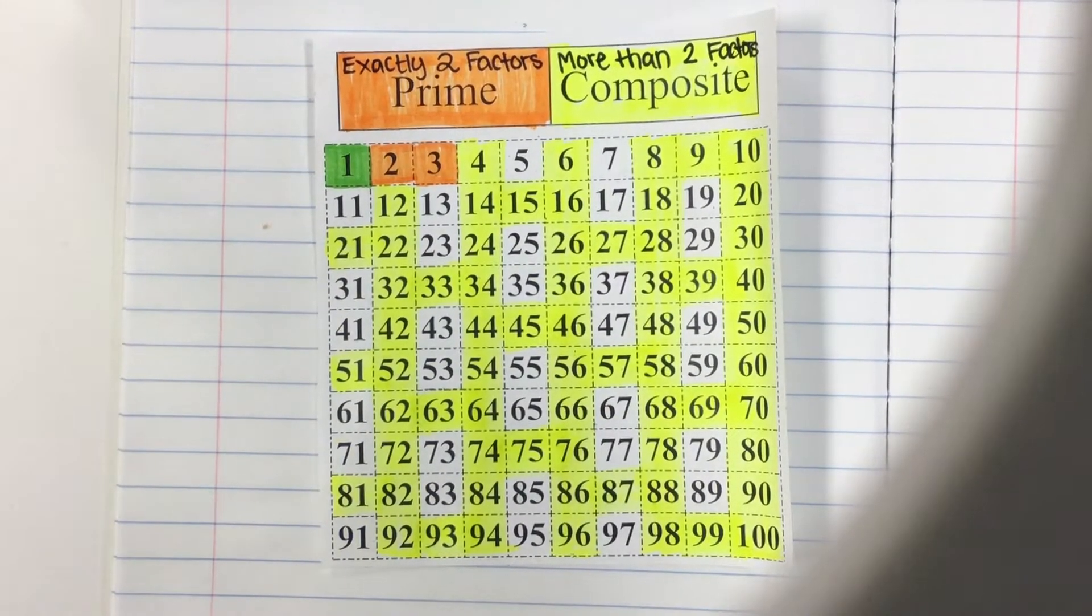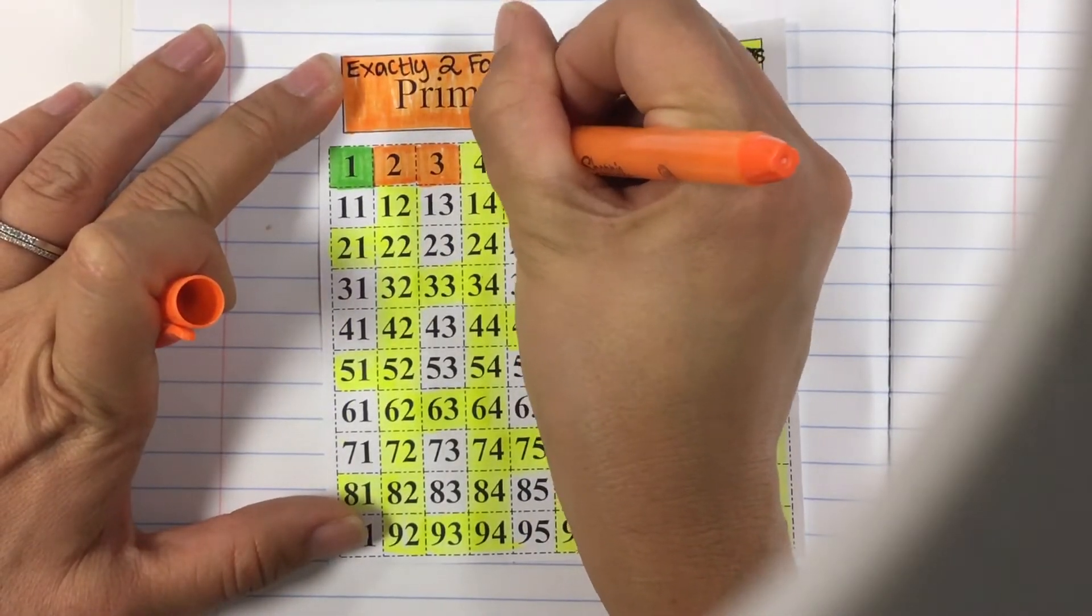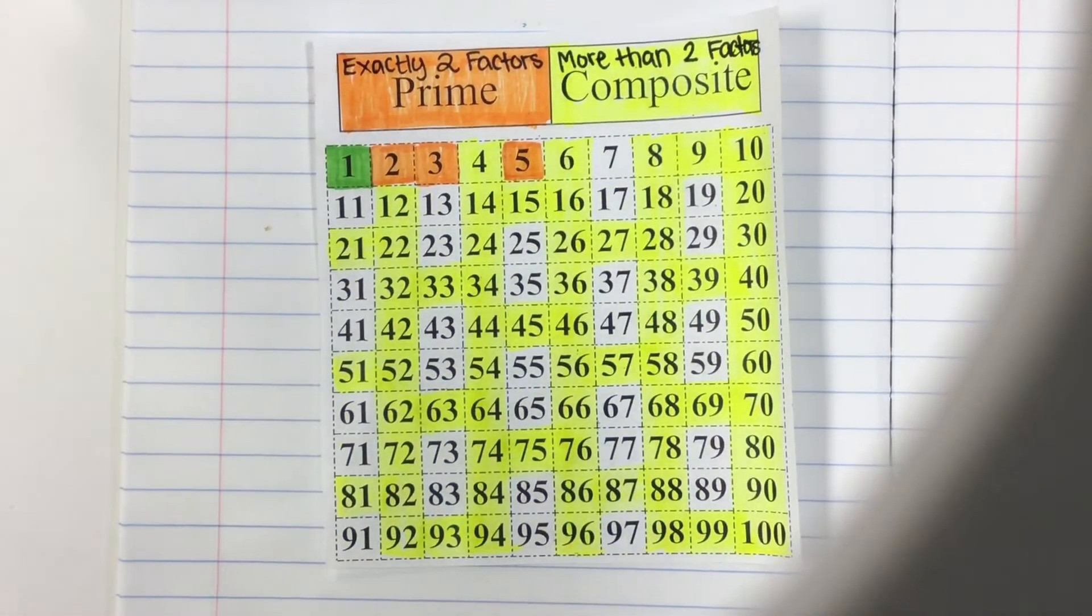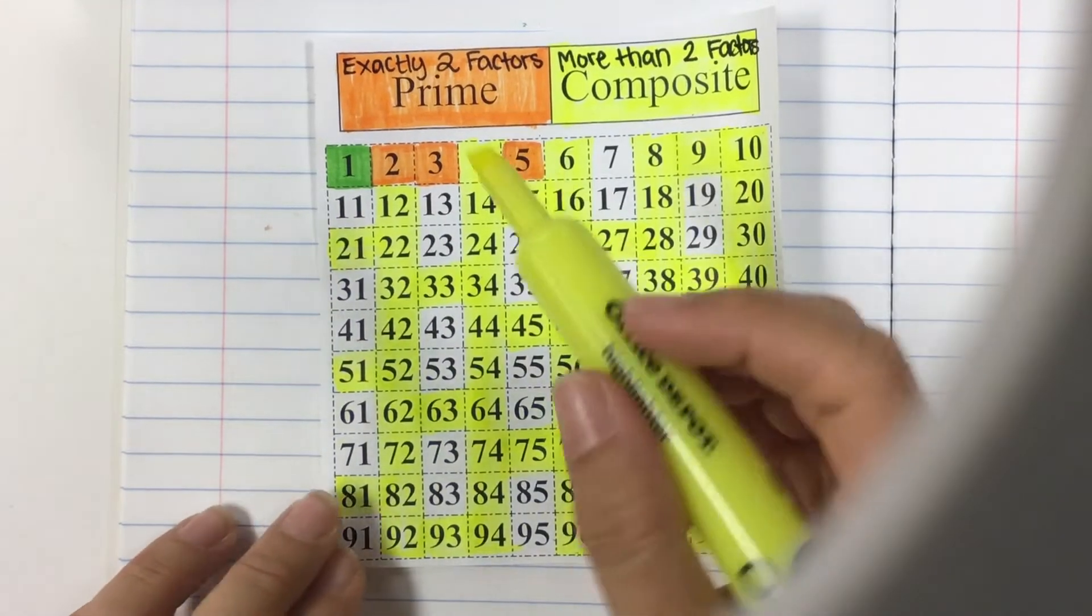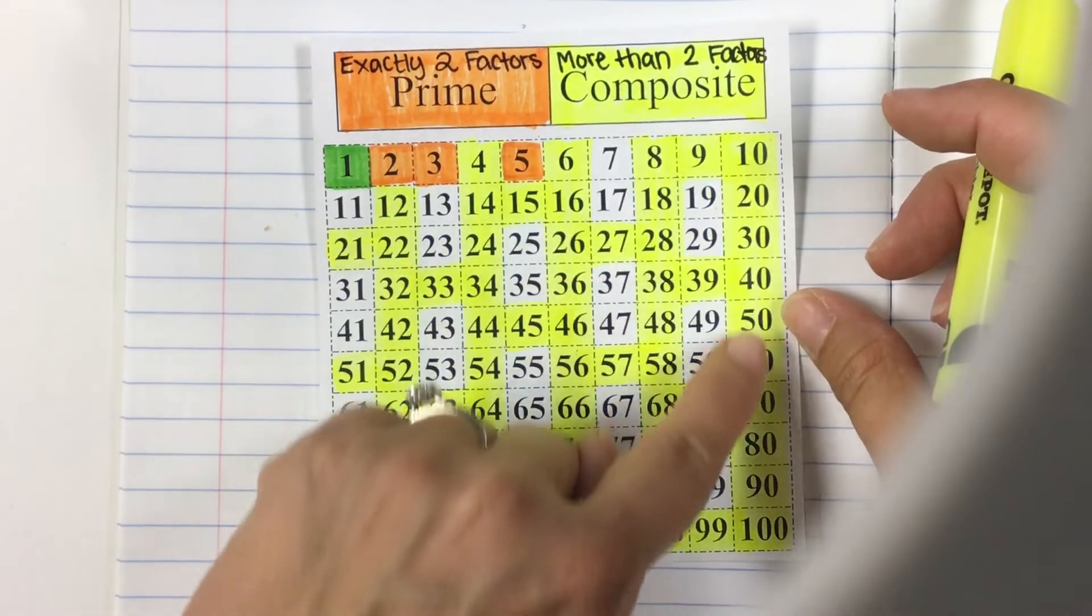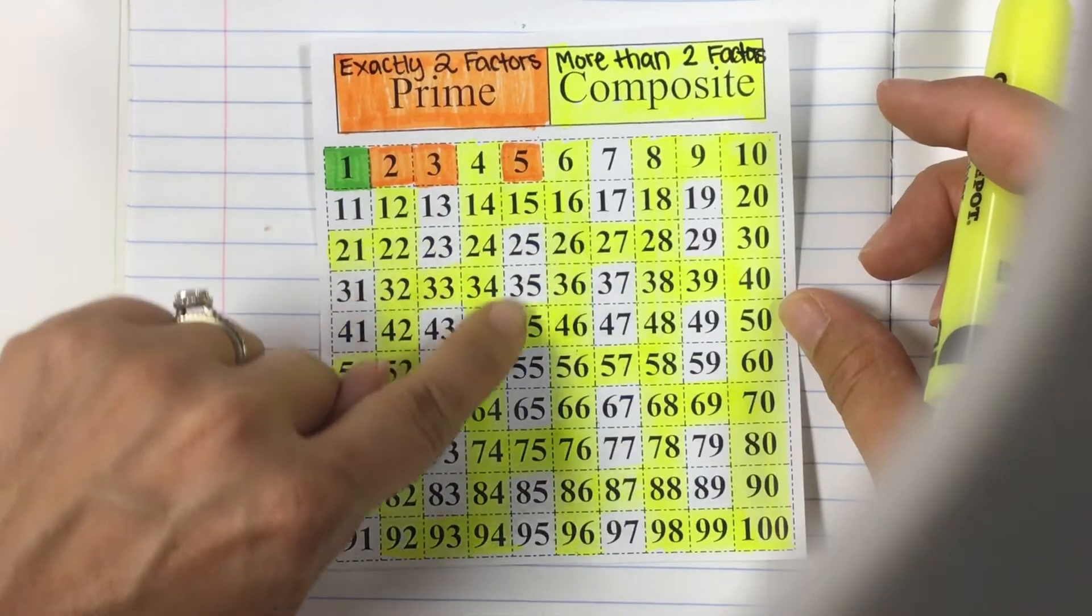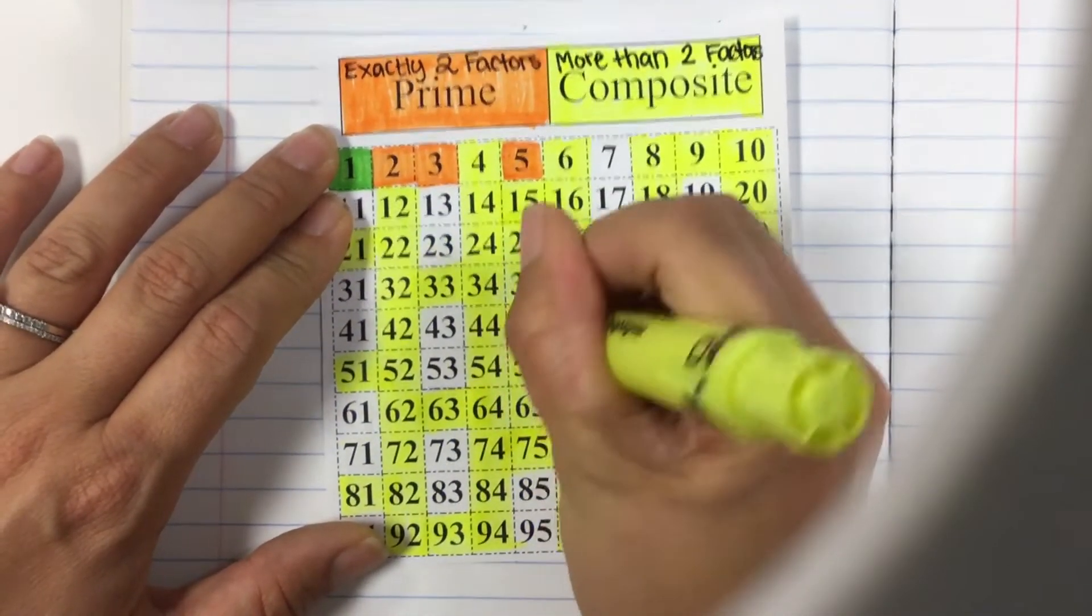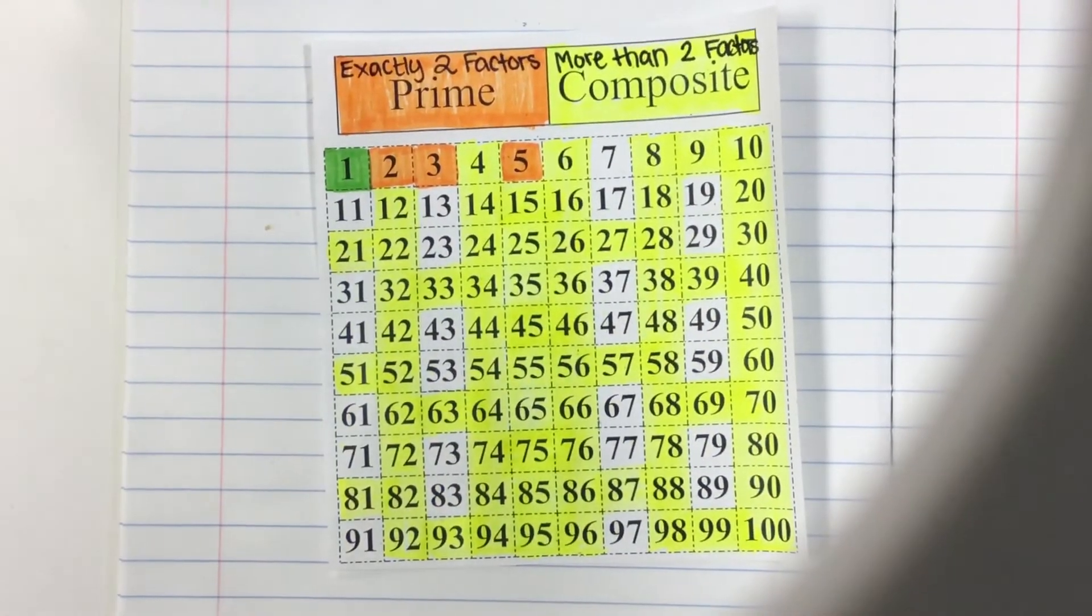Let's go to our next prime number which will be 5. The only factors for 5 are 1 and 5 so it is a prime number because it has exactly two factors. Now we need to highlight in our composite color everything that's divisible by 5. Our divisibility rules tell us that anything that ends in a 5 or 0 are divisible by 5. Notice our 0s are already highlighted because they are also divisible by 2. But some of our 5s are not highlighted so we need to just go down this row and finish highlighting any of the 5s that are not already highlighted.